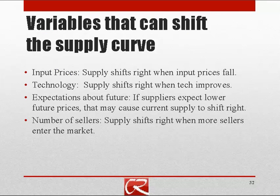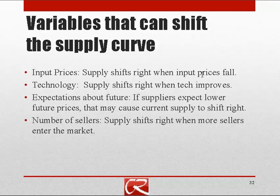Just as we covered what tends to shift the whole demand curve, what tends to shift the whole supply curve? As our last example illustrated, if there's a change in input prices, that's going to shift the supply curve. In particular, if input prices fall, then production and selling becomes more profitable and firms are going to supply more at every price, so the supply curve shifts right.